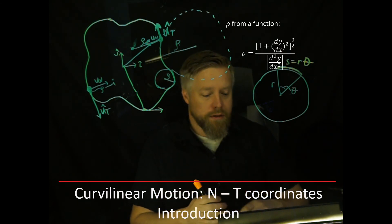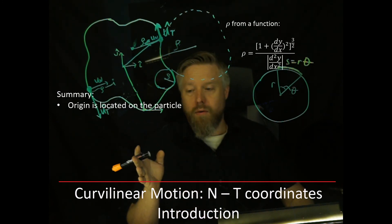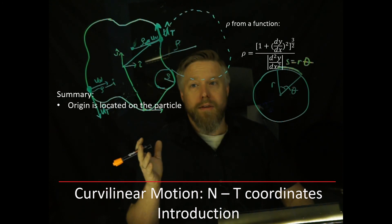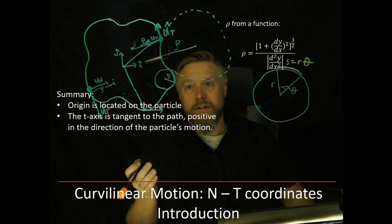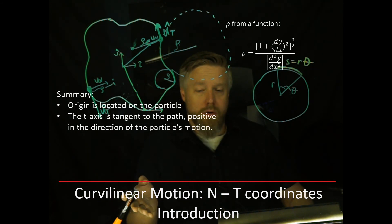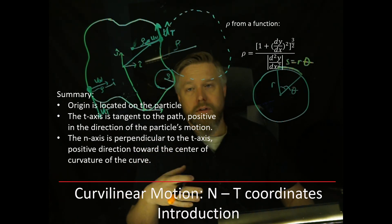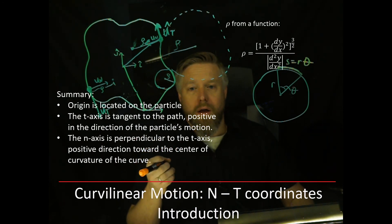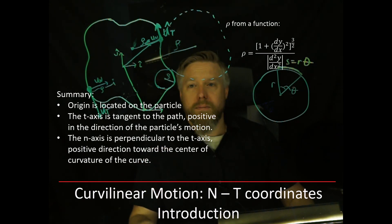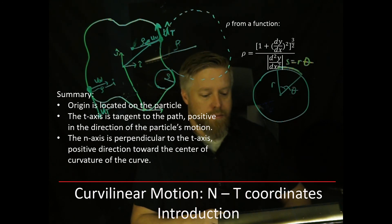Let's summarize what we've learned. In normal and tangential (NT) coordinates, the origin is located on the particle and is moving. Both ut and un are also moving. The tangential axis ut is always in the direction of motion and tangent to the path. The un axis is perpendicular to ut and always points toward the instantaneous center of curvature. Please go on to the next video where we will derive equations to help us solve these problems. Thank you.